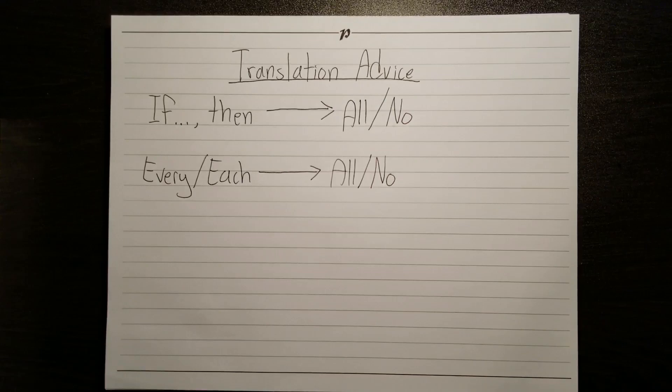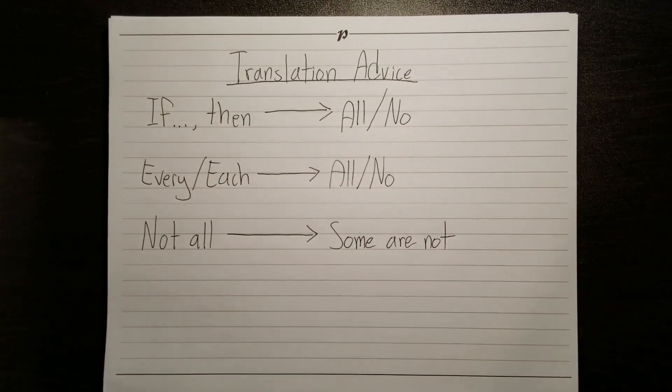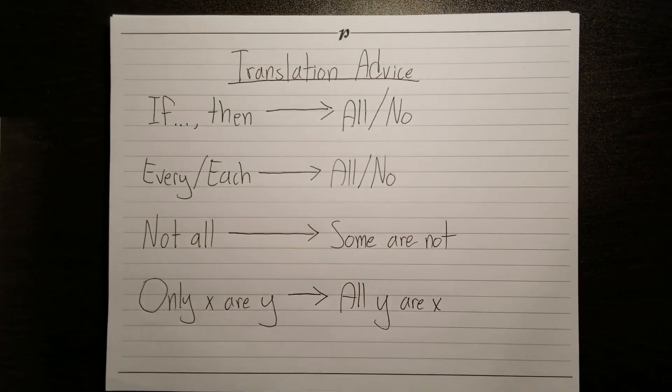When you see every or each, it's usually a universal statement. Not all always means some are not. And if you ever see only x are y, that always means all y are x.